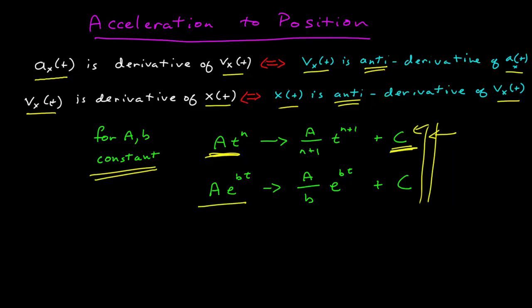By the same token, if we have A e to the bt, then the anti-derivative of that is A over b times e to the bt. You differentiate this, the b comes down, and you get this. Again, you can add any constant to it, because the derivative of a constant is 0, and you still get this.